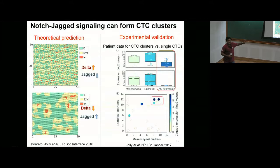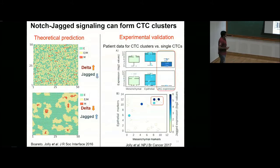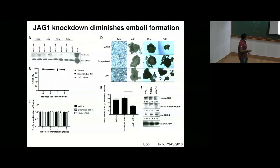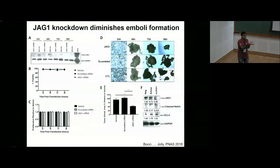This is still correlative data, so we deleted Jagged-1. Proliferation and viability were not affected — the number of cells remained the same — but cells were no longer able to form tumors, or the area of tumors/emboli formed was much smaller. This points to a functional role of Jagged in being able to form tumors, because Jagged helps maintain the hybrid cells and their stemness features; once Jagged is deleted that network gets disrupted and those properties are lost.